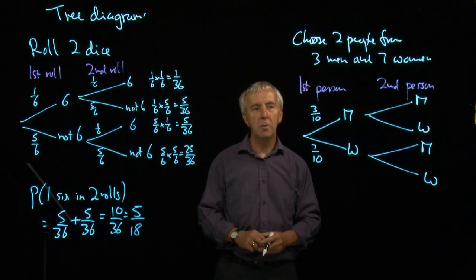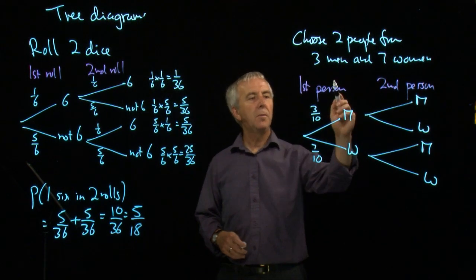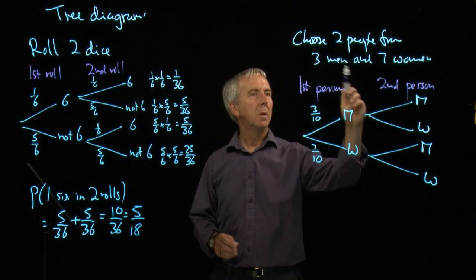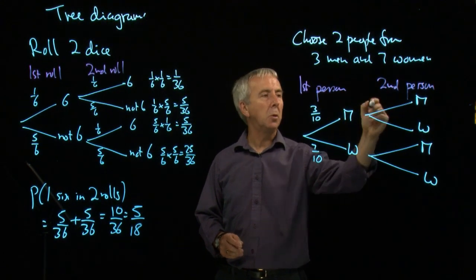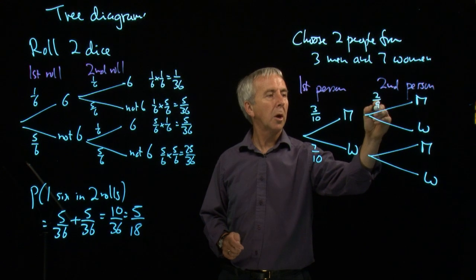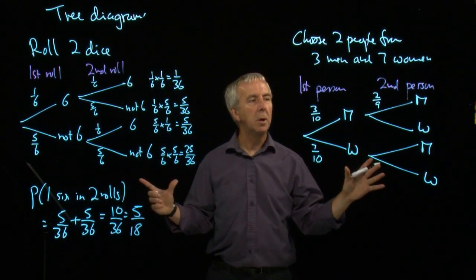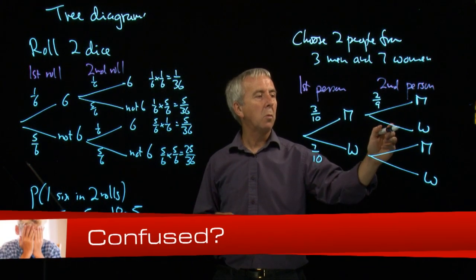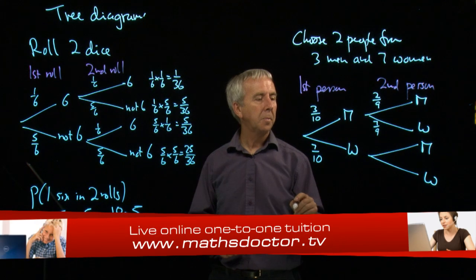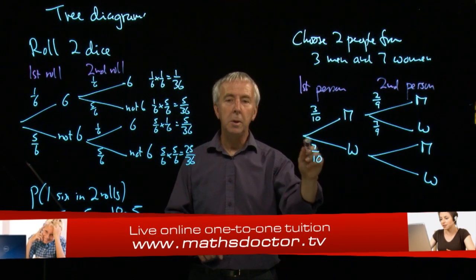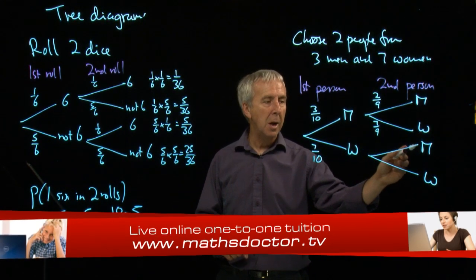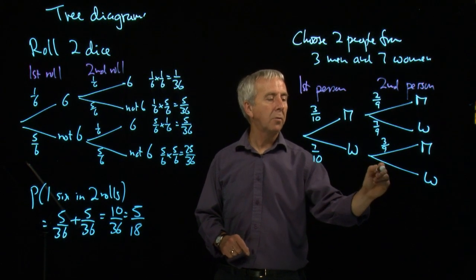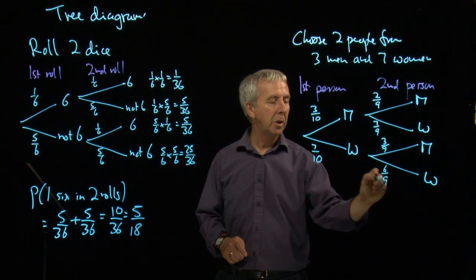But this time, the probabilities have changed. If the first person we chose was a man, out of the nine people left, there are only two men available to choose. And so the probability, if we're selecting at random, of getting a man is two out of nine. There are still seven women left, so that's seven-ninths. Whereas if the first person had been a woman, there are still three men left out of the nine. But there's only six women left, so the chance to get a woman is six-ninths.